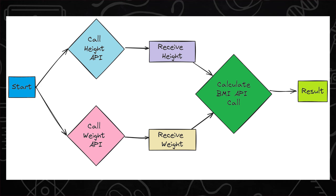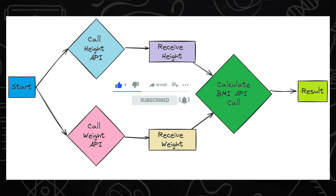To demonstrate this, let us consider a very simple example. We will be calculating body mass index, or BMI in short. We know that to calculate BMI, we need two things: weight and height of the person. Let us say both these values are fetched from two different APIs. So unlike the previous example of circle area, both weight and height can be fetched independently, and later once both are available, another CompletableFuture can be created using thenCombine to calculate the BMI based on the formula by putting in the values of weight and height.